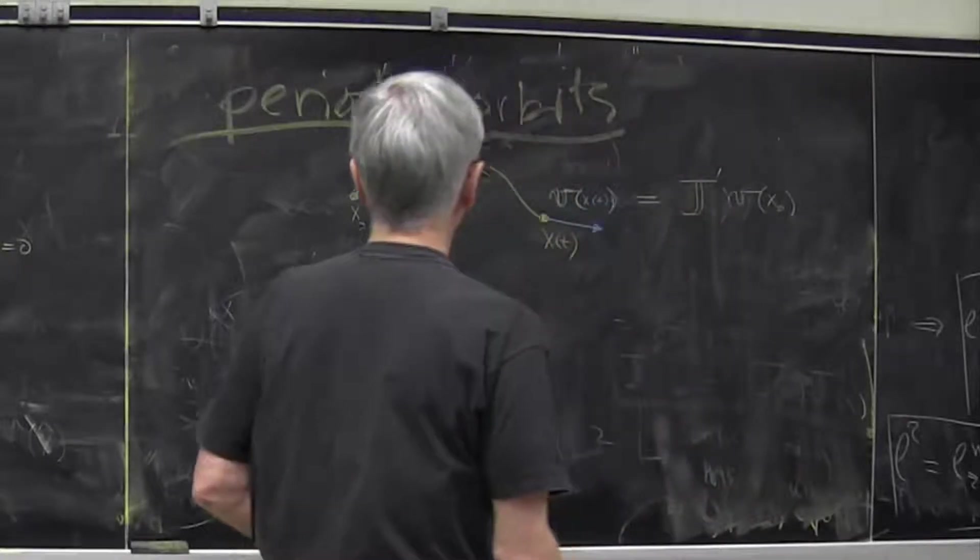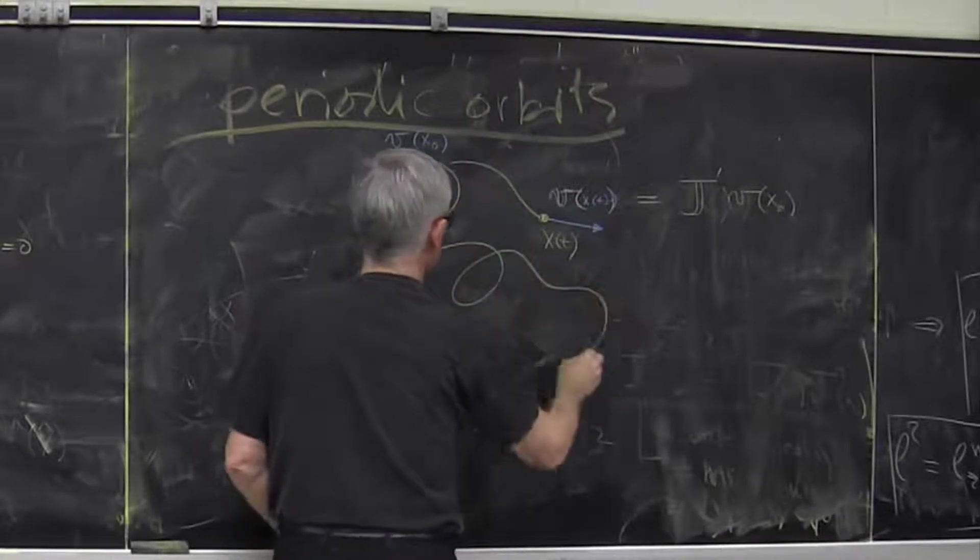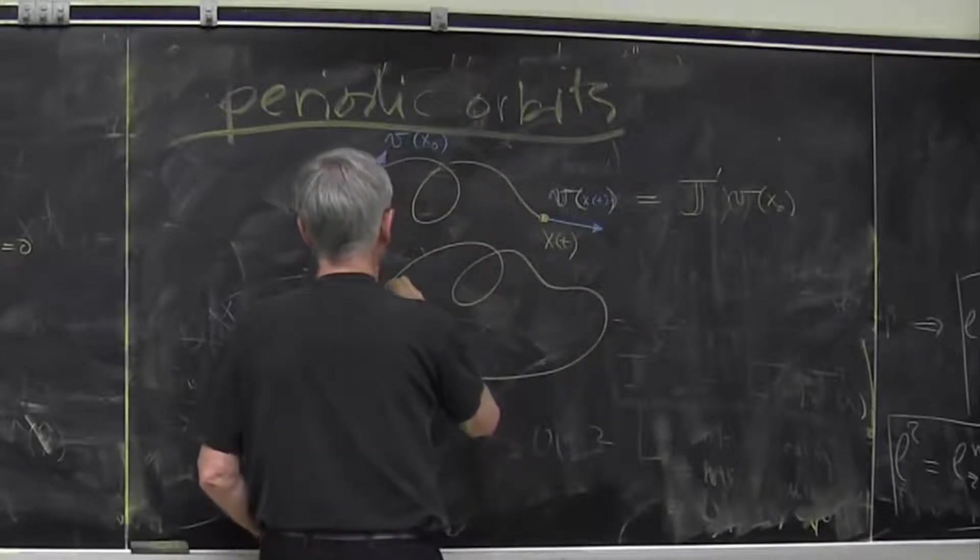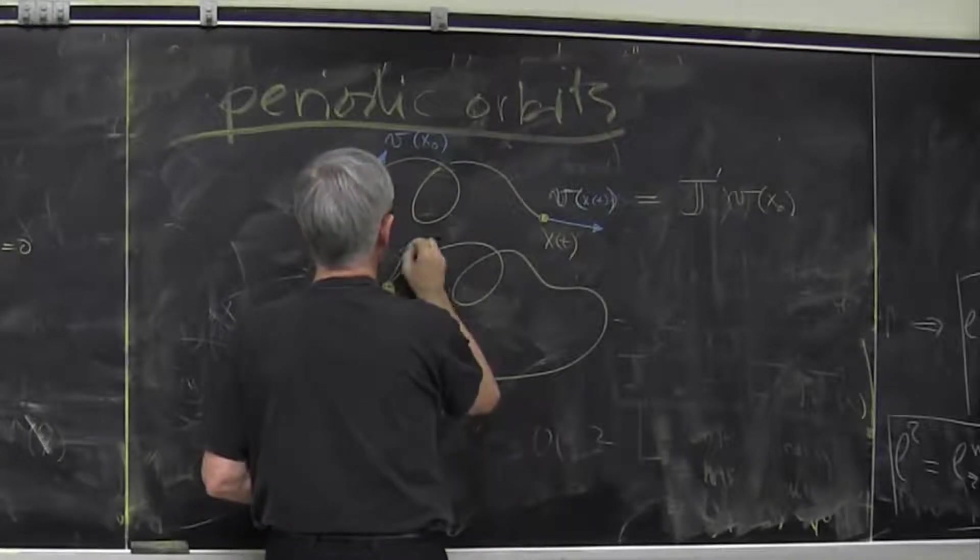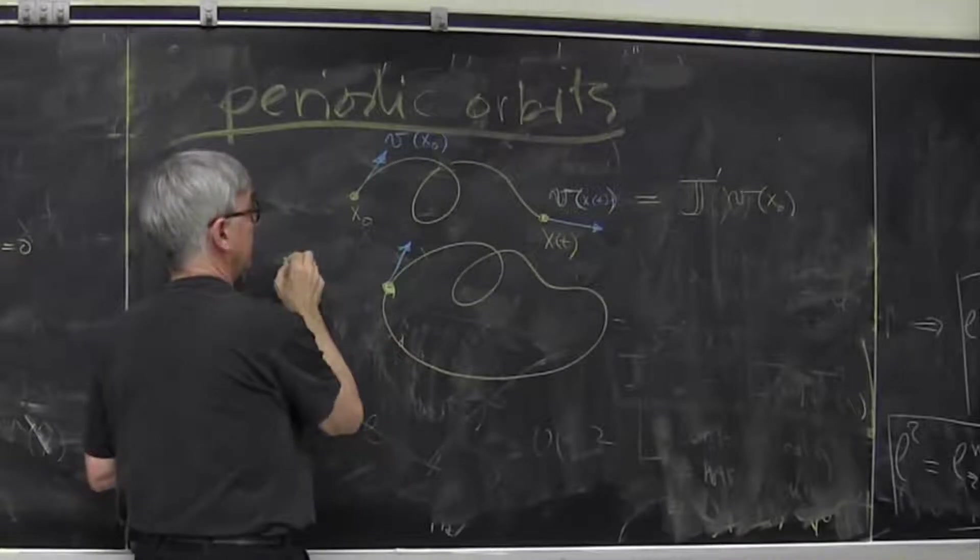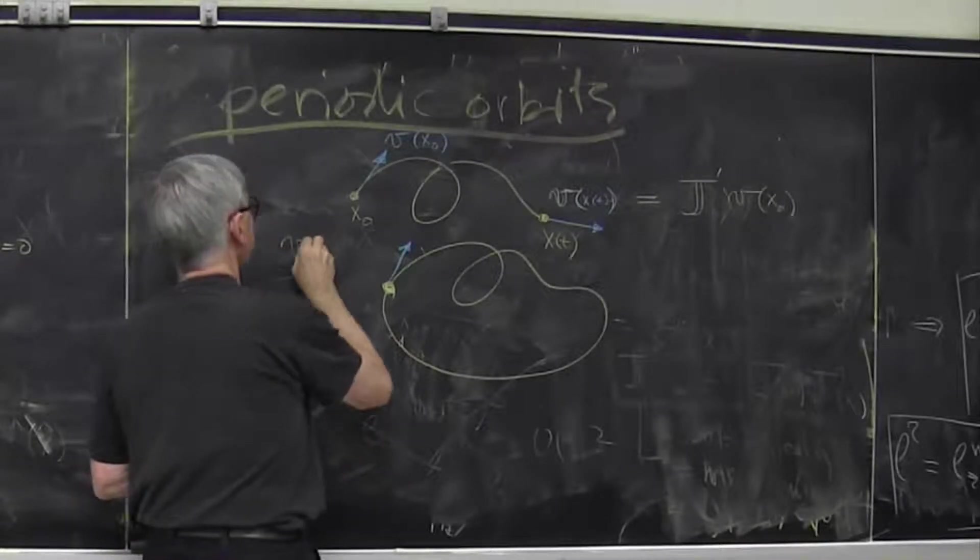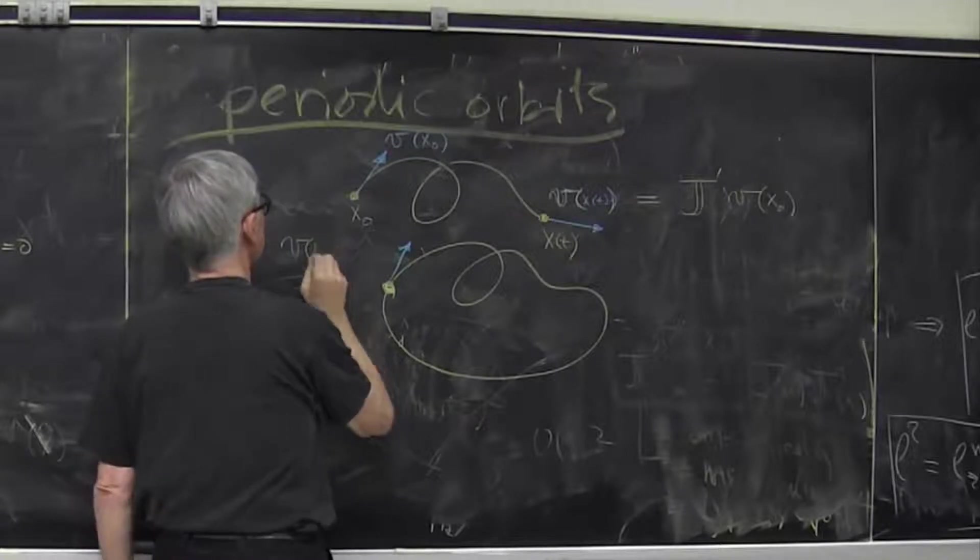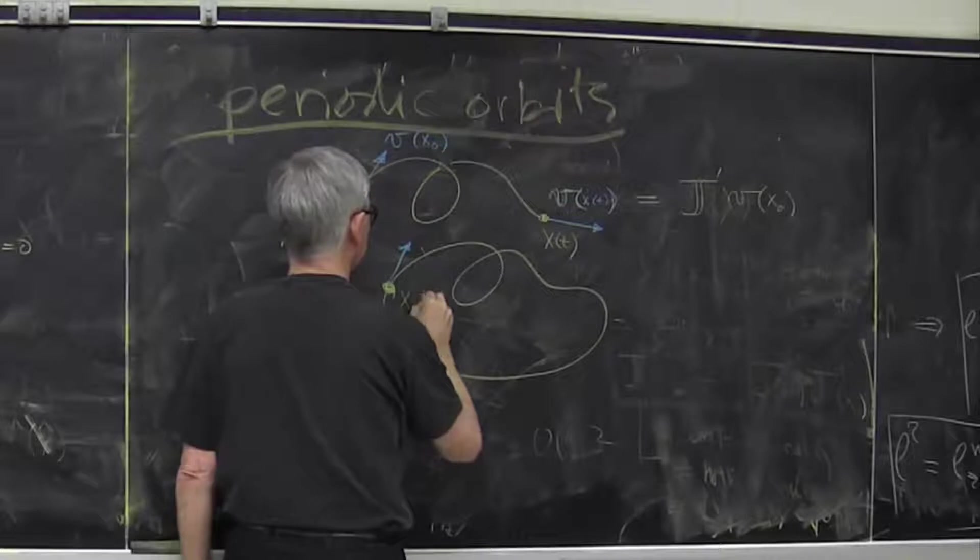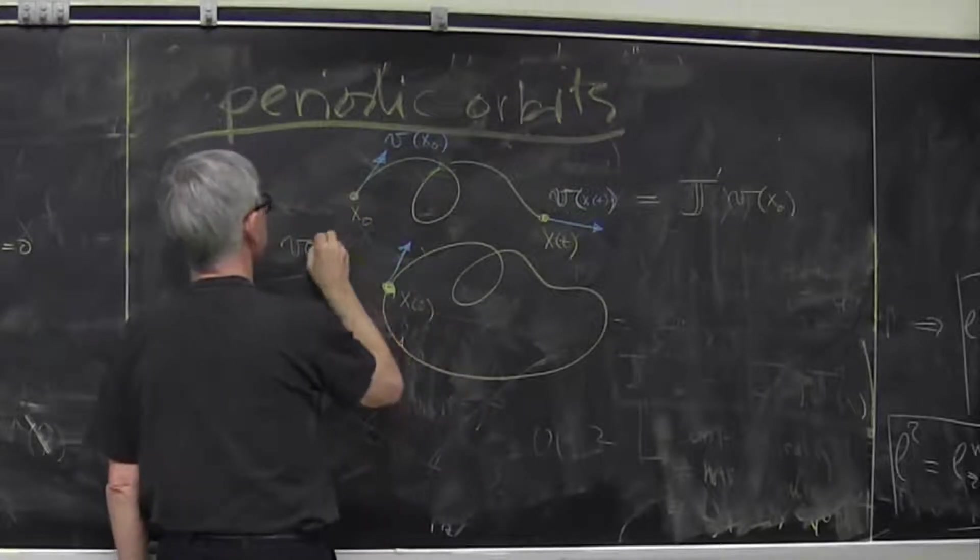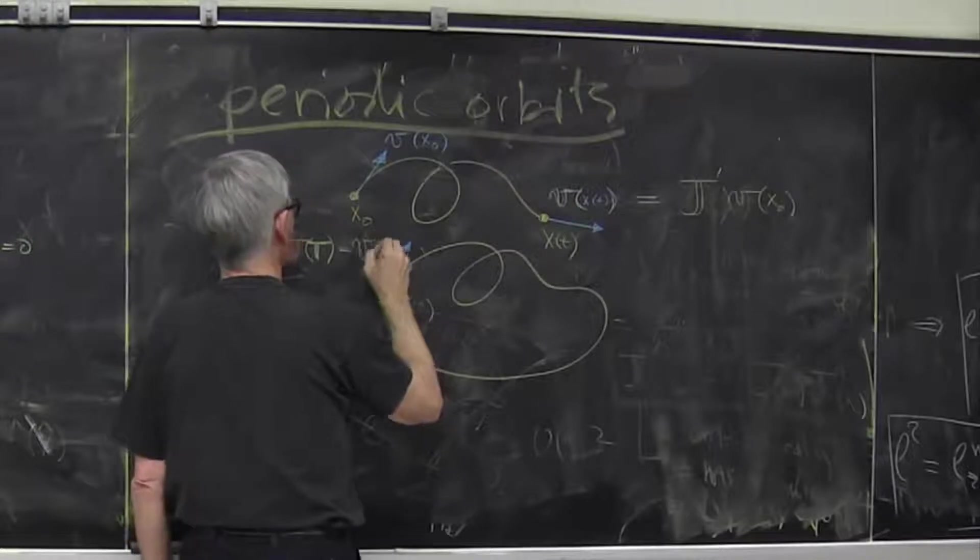However, for periodic orbit what happens is we go, we go and we come back and we find out that velocity vector at the end at time t, if this was x0, velocity vector is the same velocity vector as at the original time.